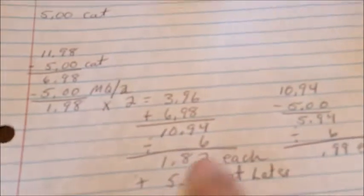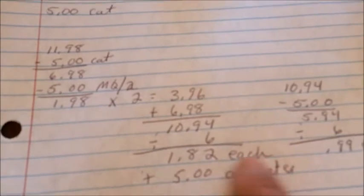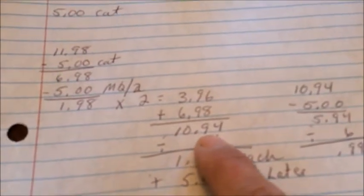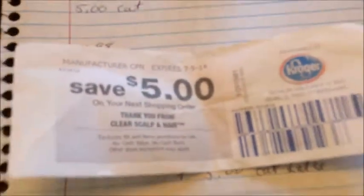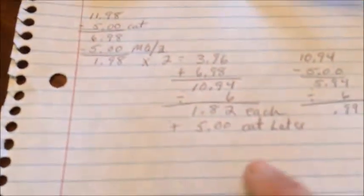I spent $1.82 each, total out of pocket was $10.94, and I have a remaining $5 Catalina to use on my next shopping trip. And the next shopping trip I will count this as cash or a coupon cash on my next transaction.